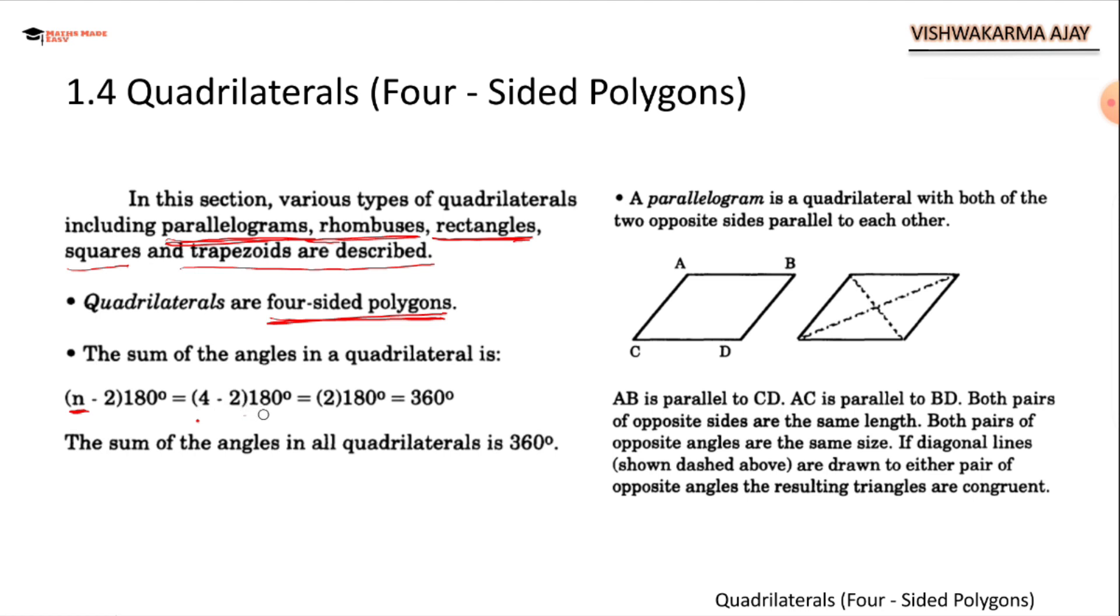4 minus 2 is 2 times 180 that is 360. So any shape having 4 sides has the total number of interior angles is 360. The sum of angles in all quadrilaterals is 360.